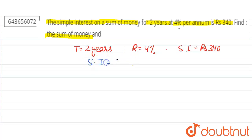Putting the values: 340 = (P × 4 × 2) / 100. Now, 340 × 100...